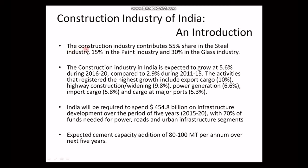In India, the construction industry contributes 55% share in the steel industry, 15% in the paint industry, and 30% in the glass industry. The growth rate of the construction industry in India was 2.9% during 2011–15, while the growth rate increased up to 5.6% during 2016–20. The activities that registered the highest growth include export cargo, highway construction or its widening, power generation, and import and export through major ports of India.